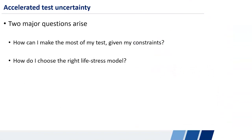So given that, two major questions arise in planning and analyzing an accelerated test. The first one is given those constraints that we just talked about, sample size, test fixtures, and so on, how can I make the most of my test? And then how do you choose the right life stress model with the limited information that we have?